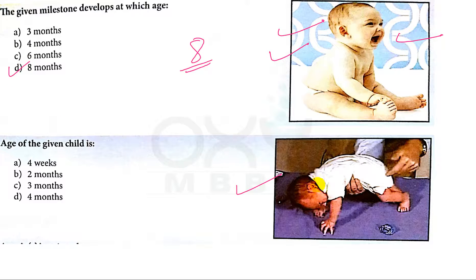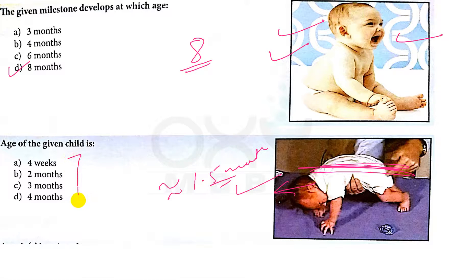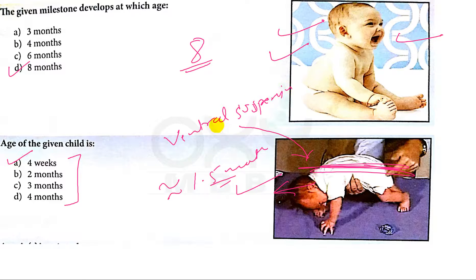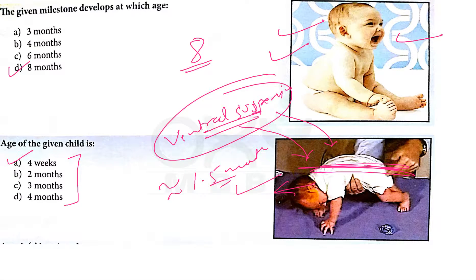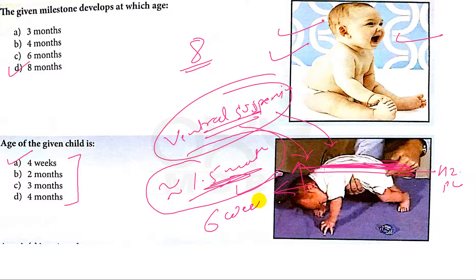Now in this picture, the child is not lifting the head above the horizontal plane. That is why the age of the baby is approximately 1.5 months, and A is the correct answer. For your knowledge, this is ventral suspension. In ventral suspension, if the child is not lifting the head above the horizontal plane, then the age of the baby is less than 1.5 months or less than six weeks.